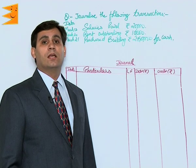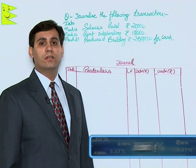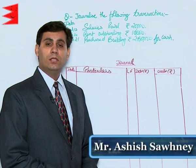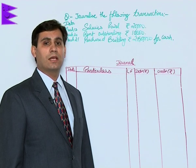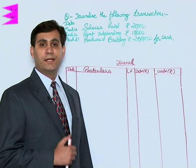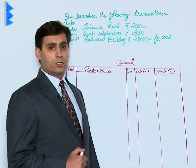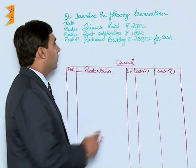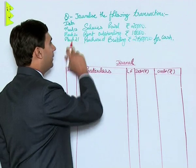Let us understand how we can generalize transactions using modern classification of accounting. Under modern classification, there are five categories in which an account can be classified: assets, liabilities, revenue, expenses, and capital. Now let us use that particular classification for generalizing these entries, starting with the entry on March 12.